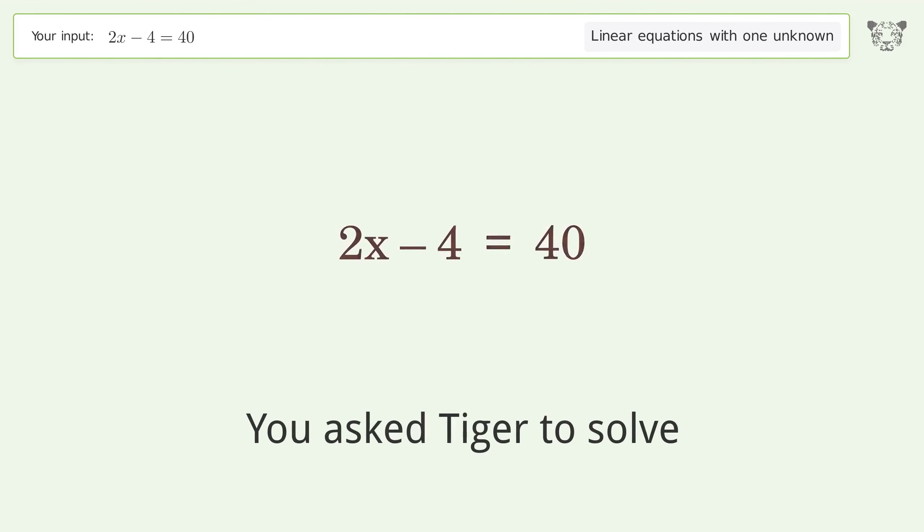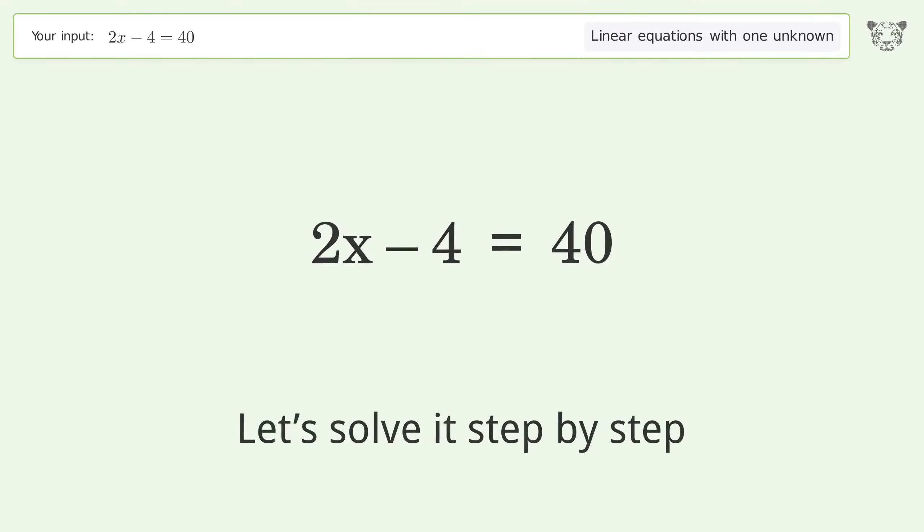You asked Tiger to solve. This deals with linear equations with one unknown. The final result is x equals 22. Let's solve it step by step.